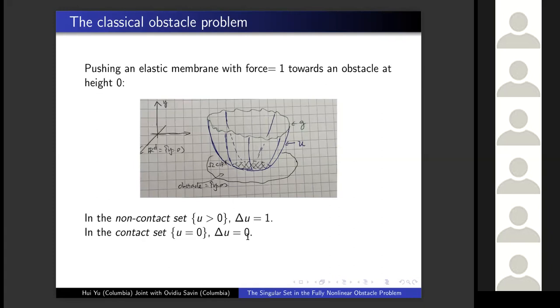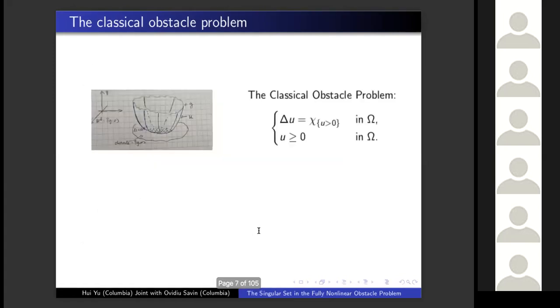The free boundary in this problem is just the topological boundary of the positive set of the solution — this is the place where the jump happens. This is the classical obstacle problem.